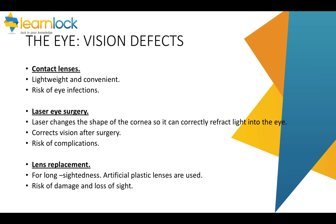There are other ways to correct vision defects. Contact lenses — some people prefer these to glasses because they're lightweight, but there is a risk of eye infections. Laser eye surgery is when a laser is used by a doctor to change the shape of the cornea — that transparent outer part at the front of the eye — so it can refract the light correctly onto the retina. This can help correct vision so you don't need to wear glasses, but there is some risk of complications, although it is rare. Finally, there is lens replacement, where artificial plastic lenses are used if the lens is really damaged, but because this is an operation there is greater risk, including risk of damage and even loss of sight.